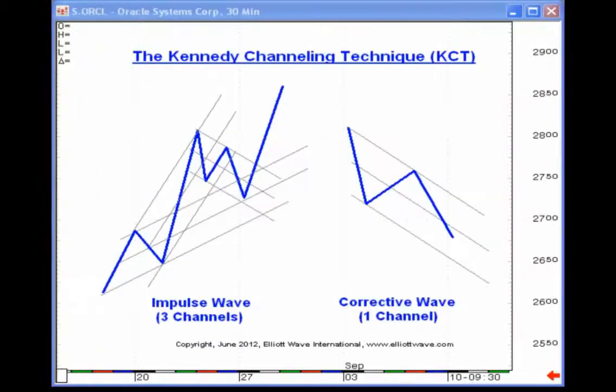Today's lesson with respect to Elliott Wave Junctures is going to be on something I call the Kennedy channeling technique. The origin of the Kennedy channeling technique came from one question a long time ago that I had — a problem that I think many Elliottians face early on in their career. That is, if you have a five-wave advance followed by a three-wave decline followed by another five-wave advance, what is the accurate labeling for that?